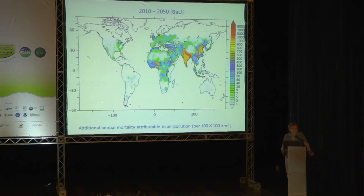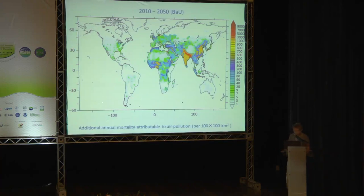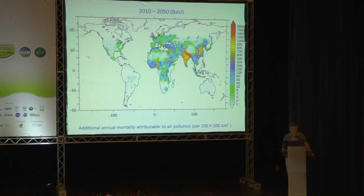In a business-as-usual scenario — not a prediction — you see the growth between 2010 and 2050. The growth is particularly strong in India. If business-as-usual is not averted and emissions are not controlled, India is in really bad shape in the future.